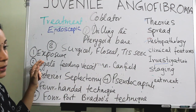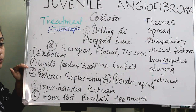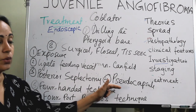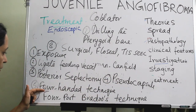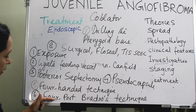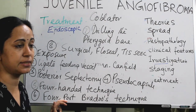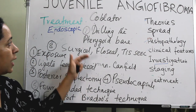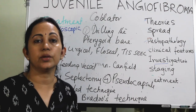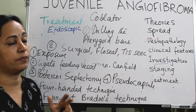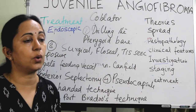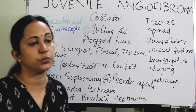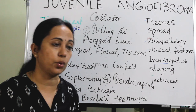All these are important surgical considerations: adequate exposure of the tumor, ligating the feeding vessel first, posterior septectomy to increase access, dissecting along the pseudocapsule from lateral to medial, four-handed technique for larger tumors, drilling the pterygoid base at the end, adequate hemostatic material and blood bank access, and informed consent for conversion to open approach whenever needed.